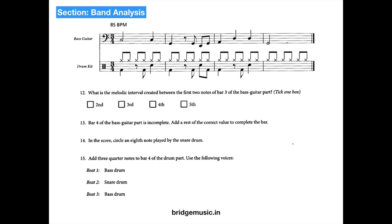What is the melodic interval created between the first two notes of bar 3 of the bass guitar part? The two notes are A and D — which is an interval of a fourth. Bar 4 of the bass guitar part is incomplete — add a rest for the correct value to complete the bar. There are two beats missing, so you need to put a half note rest. Circle an eighth note played by the snare drum. The snare drum plays an eighth note only in this bar, so circle that. Add 3 quarter notes to bar 4 of the drum part using the following voices: bass drum, snare drum, and bass drum — I will leave that for you to do.